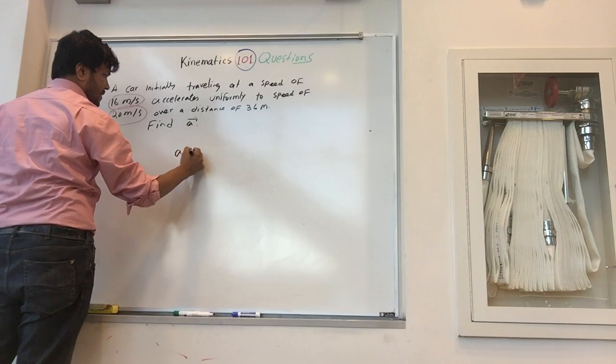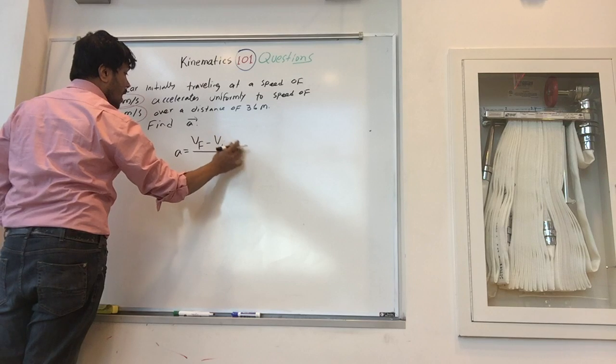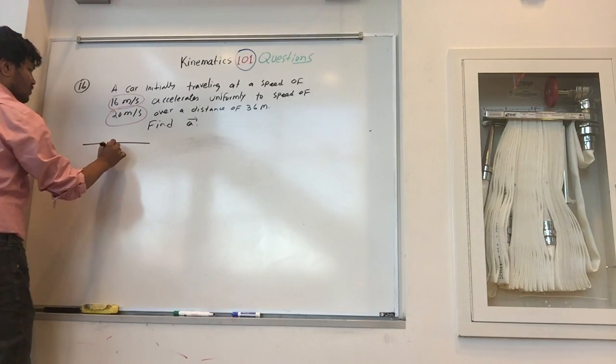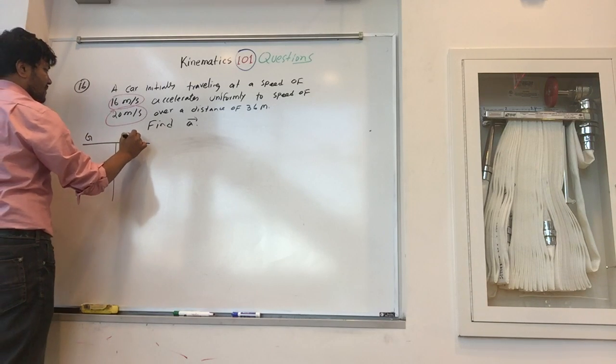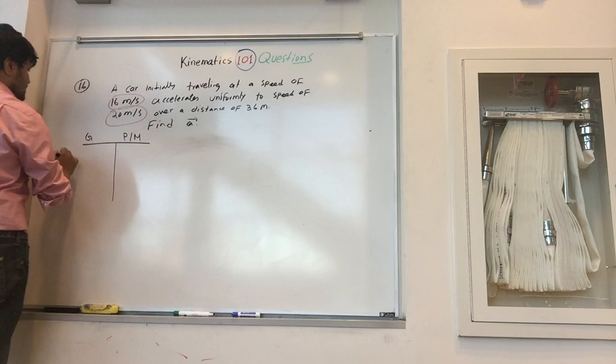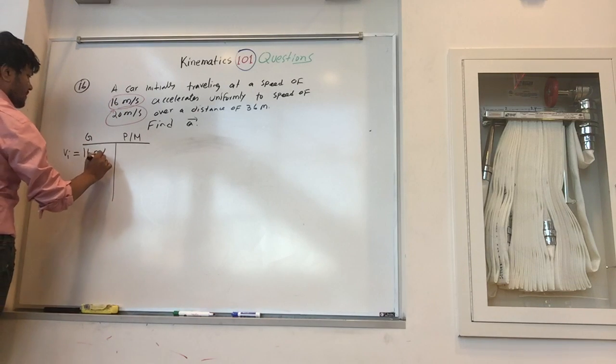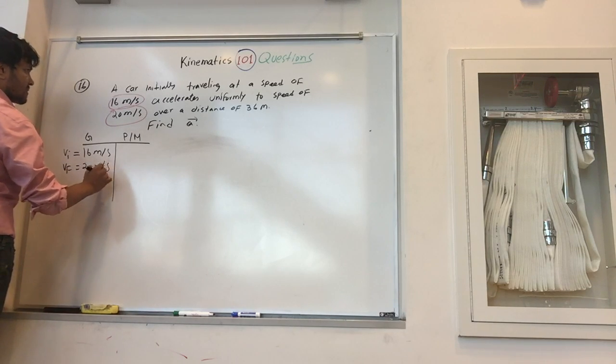So acceleration is velocity final minus velocity initial. Let's make a table before we do anything - even physics and math. Velocity initial is 16 meters per second and velocity final is 20 meters per second.